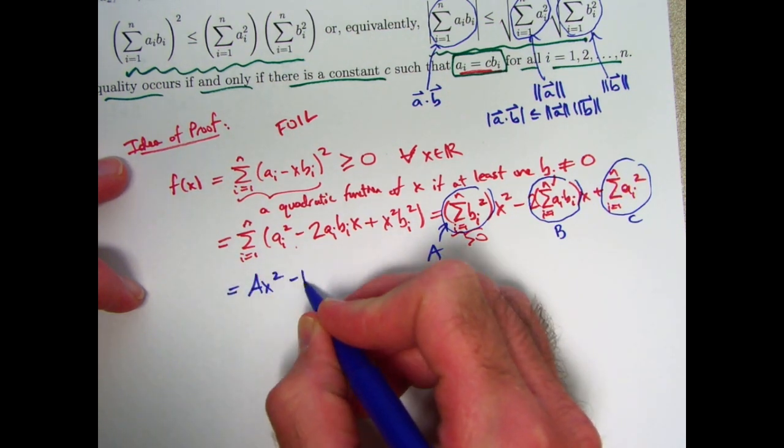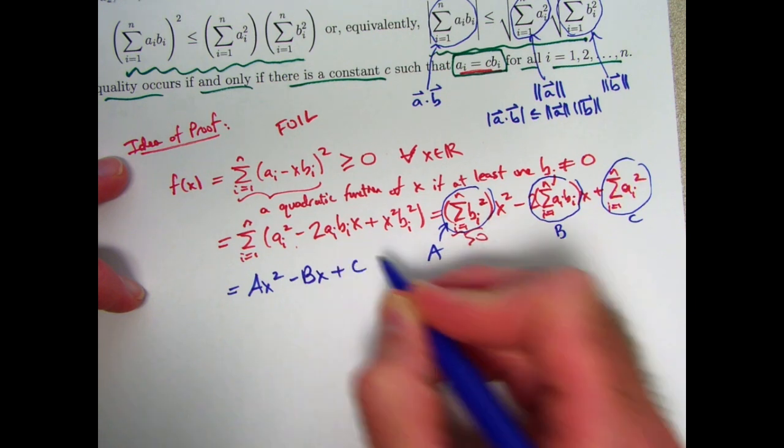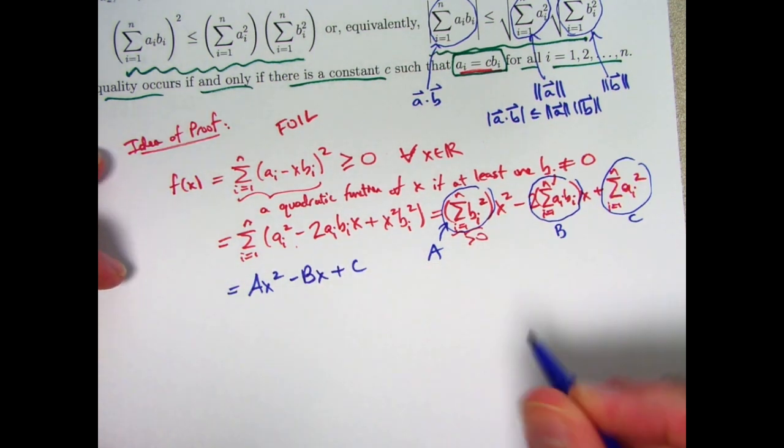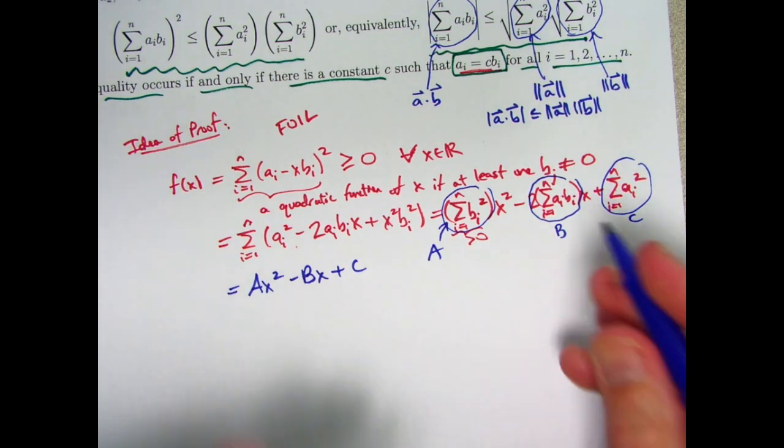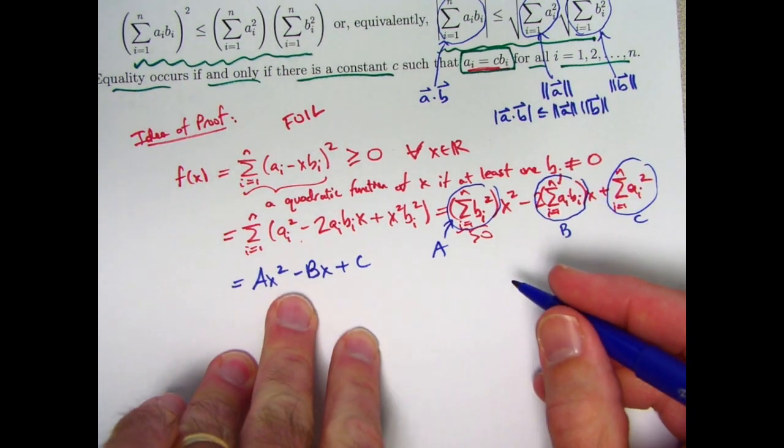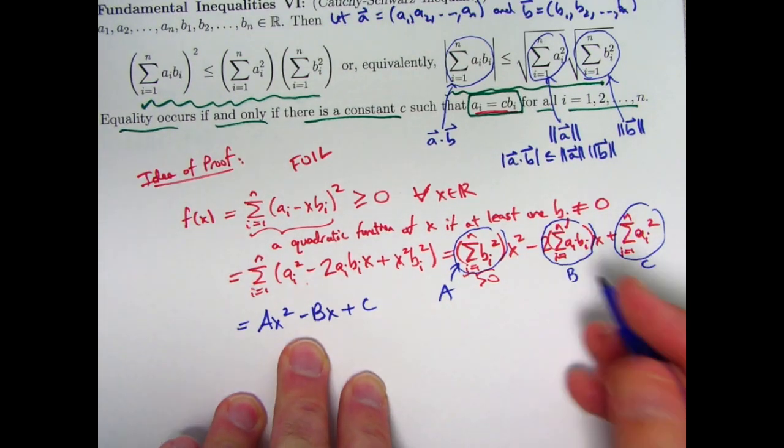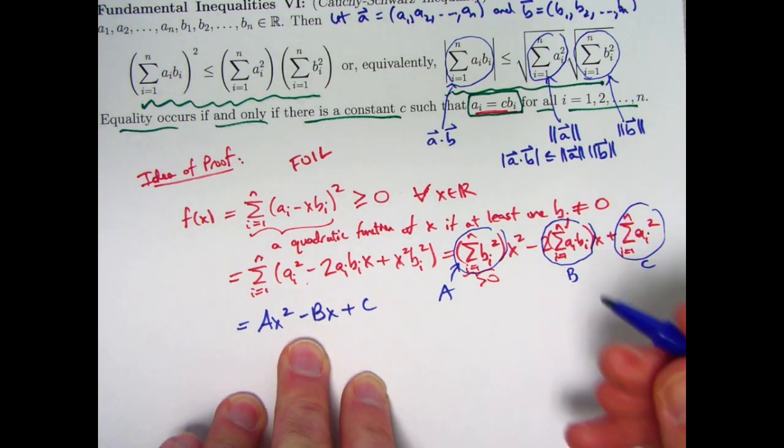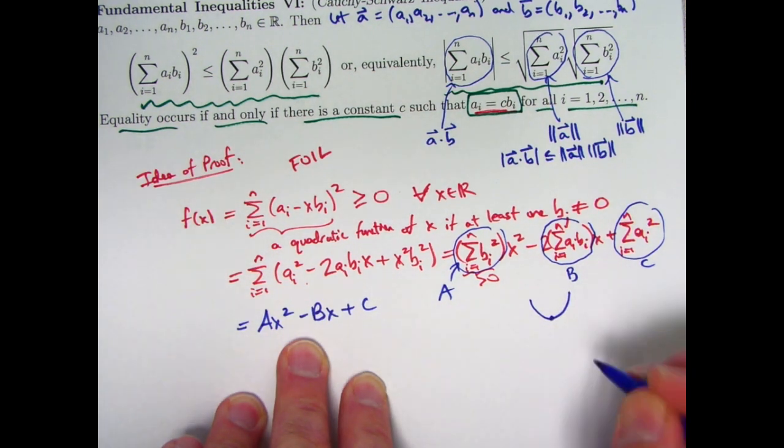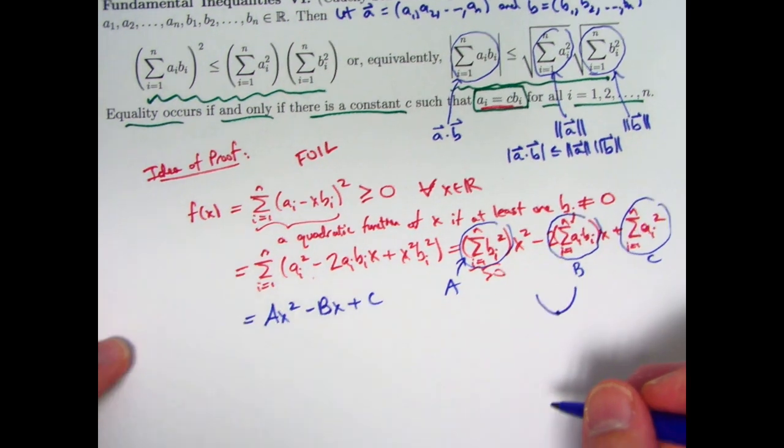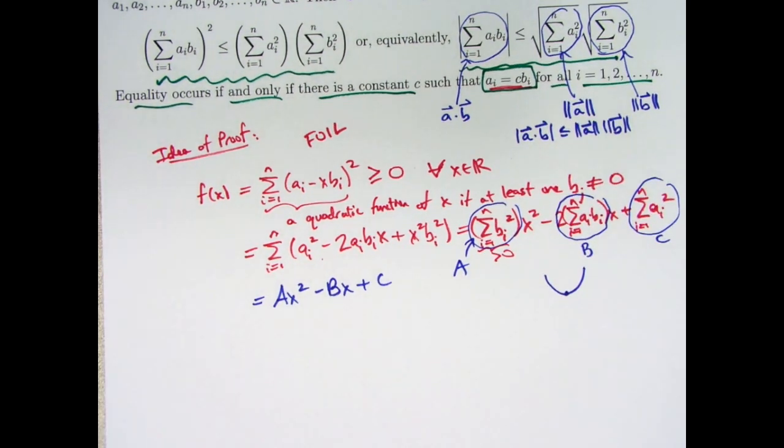Now again, we're avoiding calculus. This is a function of x—for fixed a's and b's, this is a function of x that you could graph—and since A is positive, it would be a parabola opening upward and there would be a minimum value to it. It turns out finding that minimum value is the key to finishing the proof. But how would you find the minimum value without using calculus? Maybe you've done this before: you can complete the square.